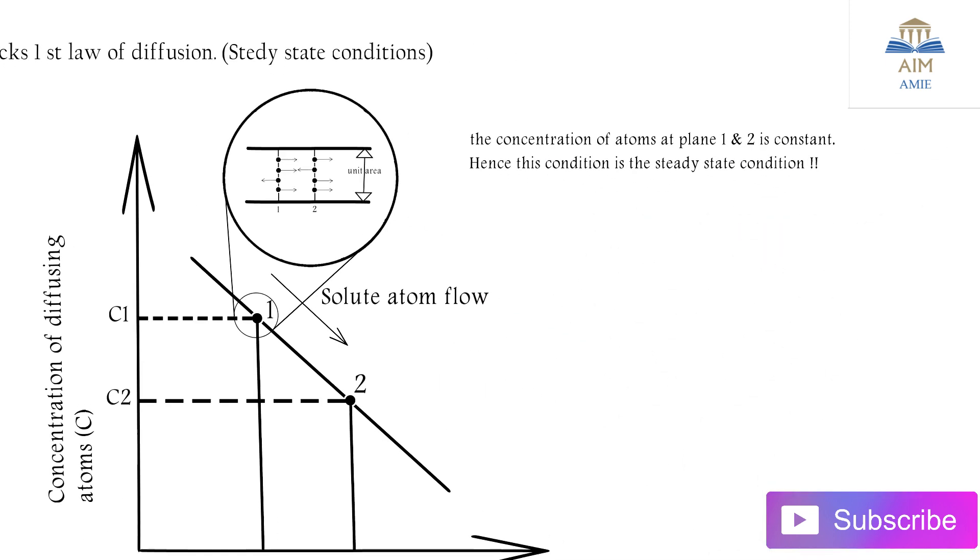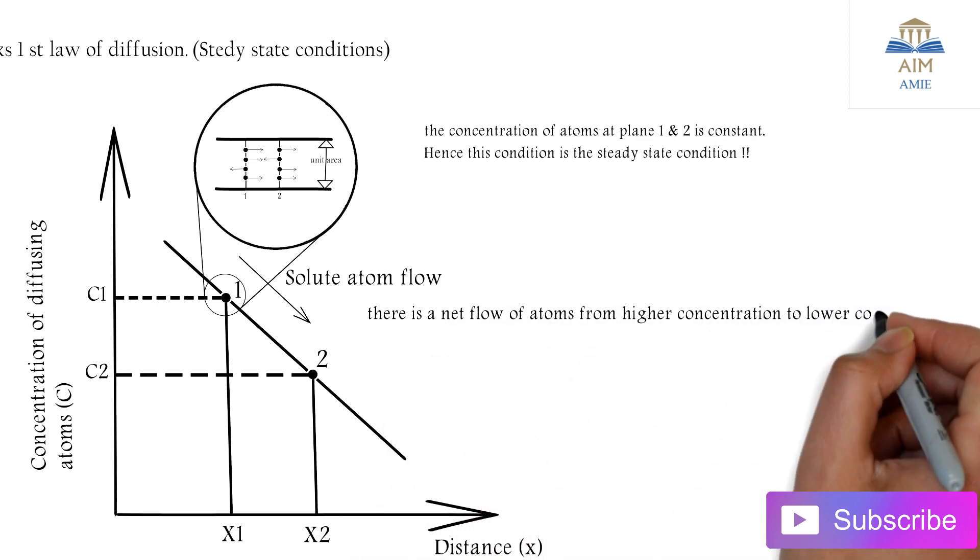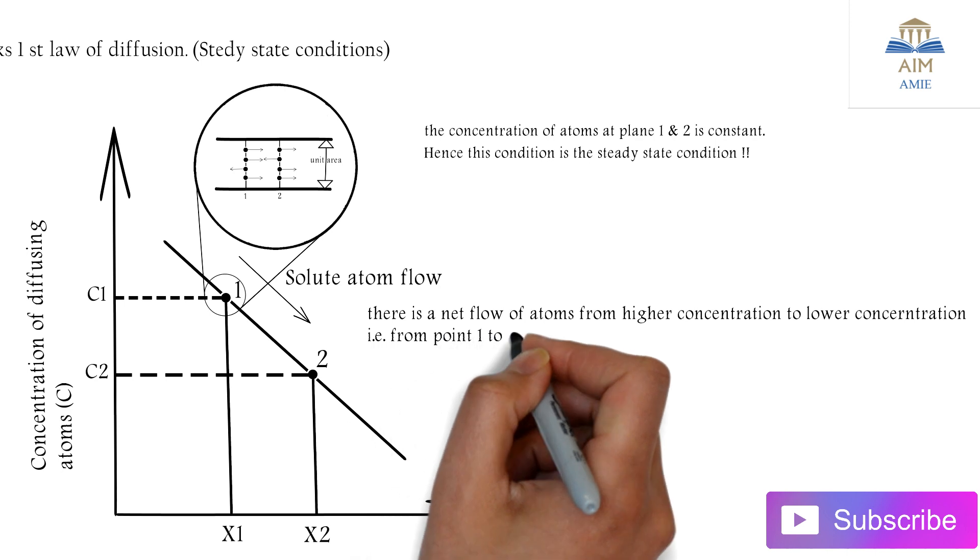There is a net flow of the atoms from higher concentration to lower concentration, that is from point one to two.